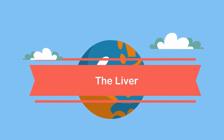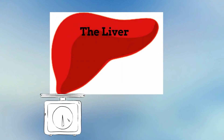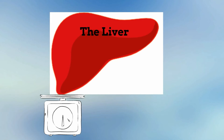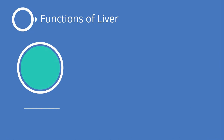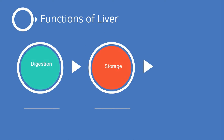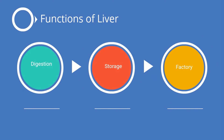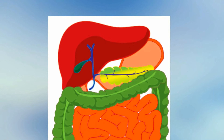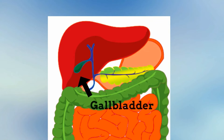The liver is the largest internal organ we have. It is very important to all organisms that have a liver and we would quickly die without our liver. The liver has many functions — it aids in digestion, stores important nutrients, and is a manufacturing plant. The liver stores a green substance called bile, which is used in the large intestines to help break down fats. Bile is stored in the gallbladder, which is found right underneath the liver.